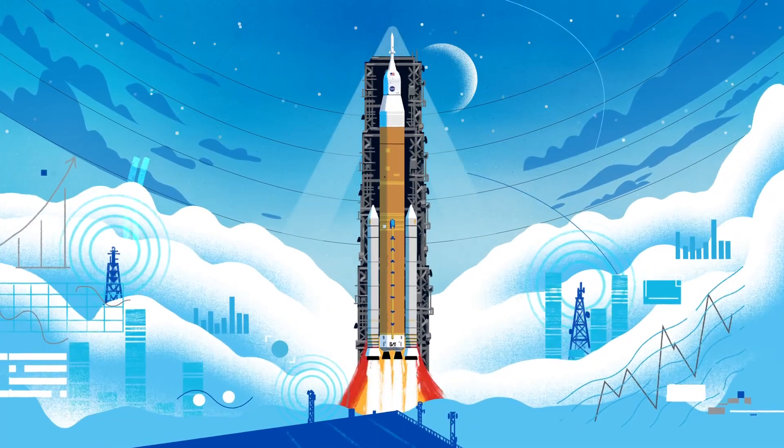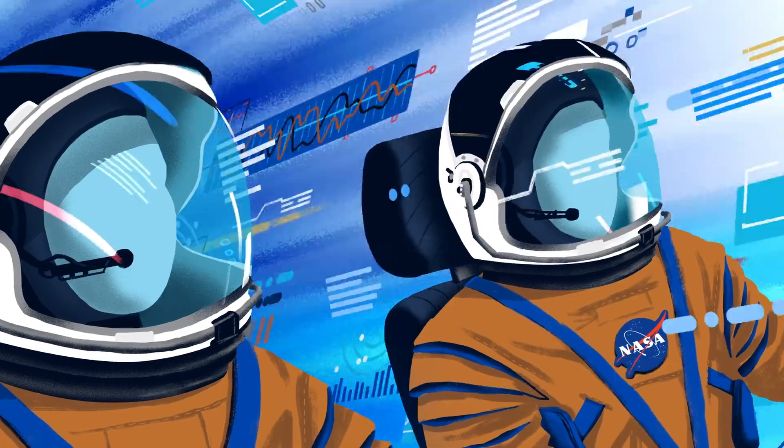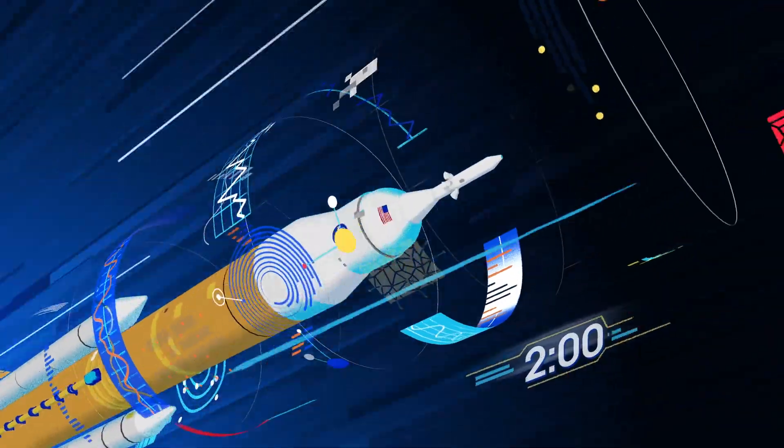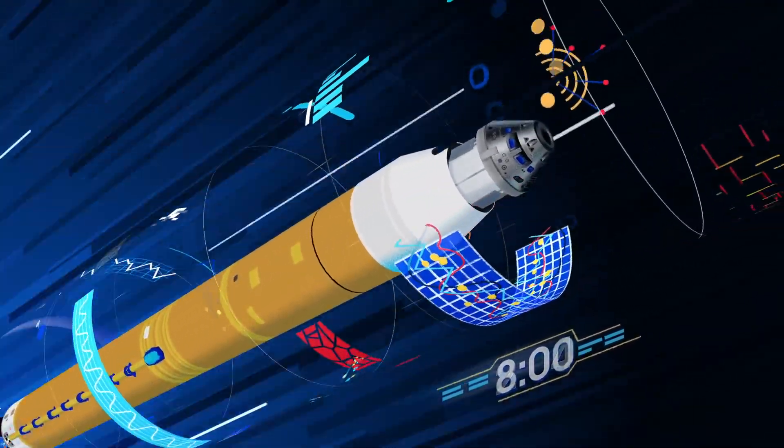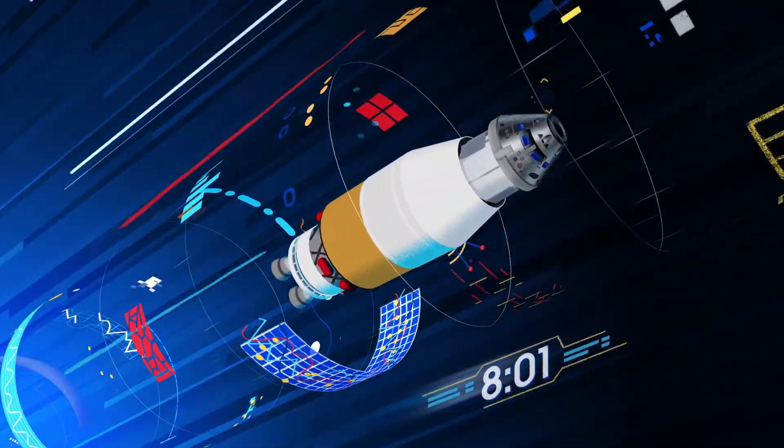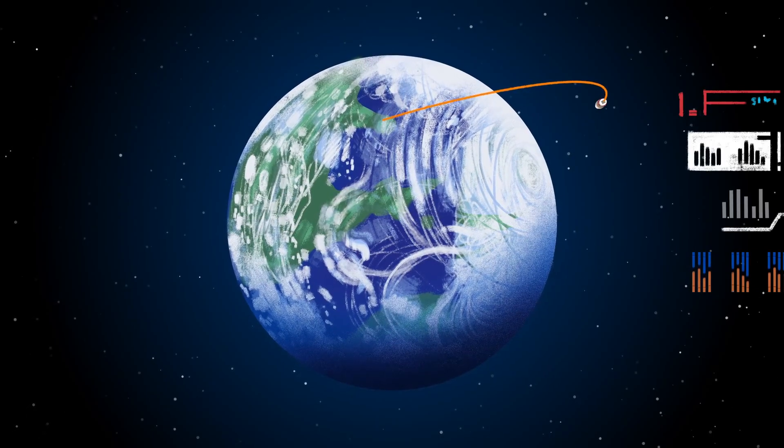All four RS-25 engines and the two solid rocket boosters come to life, thundering our crew upwards. Two minutes after ignition, the solid rocket boosters are spent and released. Eight minutes after launch, the core stage is depleted and separated. The upper stage fires briefly, placing Orion into a parking orbit around the Earth.